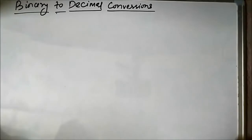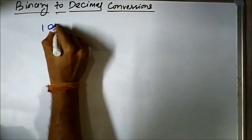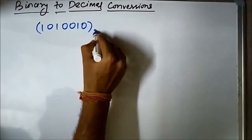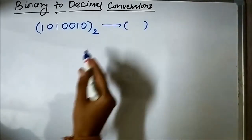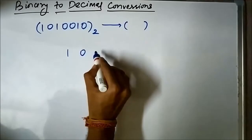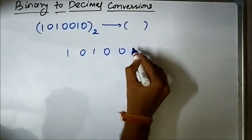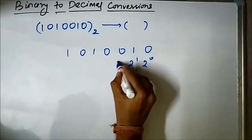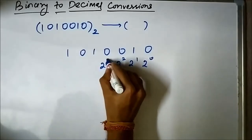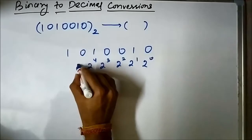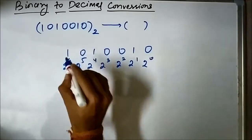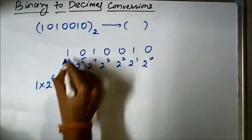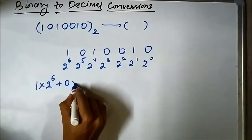Let us take another binary number: 1010010. We have to convert it into its equivalent decimal form. Let us write it down — 1010010. This rightmost bit has a weight value of 2 to the power 0, the next 2 to the power 1, then 2 to the power 2, 3, 4, 5, and the leftmost bit has 2 to the power 6. The decimal equivalent can be written as 1 × 2⁶ + 0 × 2⁵.